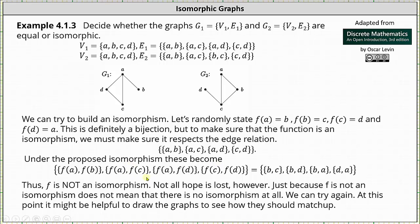Applying the proposed isomorphism, notice how we get the edge set BC, BD, BA, and DA. Notice the B and the C in this first edge set came from F of A and F of B. The second edge set of BD came from F of A and F of C and so on.